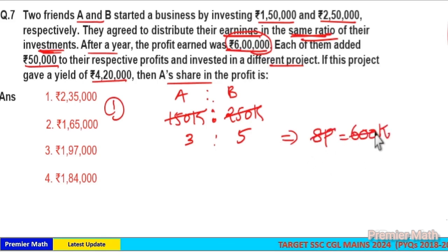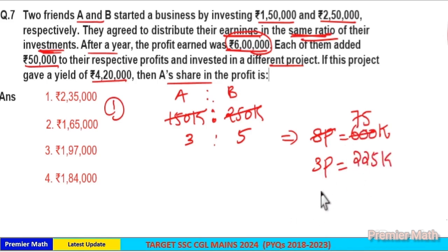Then 1 part is equal to, 8 goes 7 times in 56, 5 times in 40. So 1 part is ₹75,000. Then 3 part is equal to 3 into 75. 75 into 3 is equal to 225, so ₹225,000. Then 5 part is equal to 75 into 5. 70 into 5 is equal to 350, 5 into 5 is 25, so 350 plus 25 is ₹375,000.